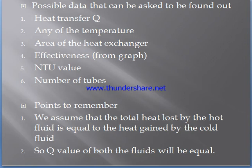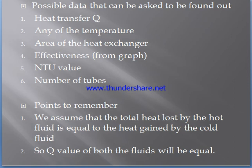For NTU method problems, this LMTD formula cannot be used. First, we have to find out mC multiplied by Cp — that is, mass flow rate into specific heat, known as the capacity rate — and identify which capacity rate is lower. Using the corresponding formula, values are substituted and the NTU value is found. Once the NTU value is found, we refer to the graph to find the effectiveness, and then calculate the Q value.